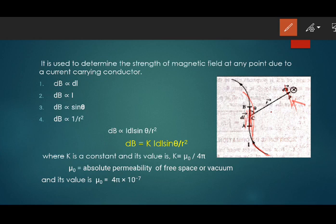It was found that the magnetic field strength dB was directly proportional to dl. If the length is more, dB will be more. It was directly proportional to current I also. If current is more, the strength is also more. Then it was proportional to sine of theta.